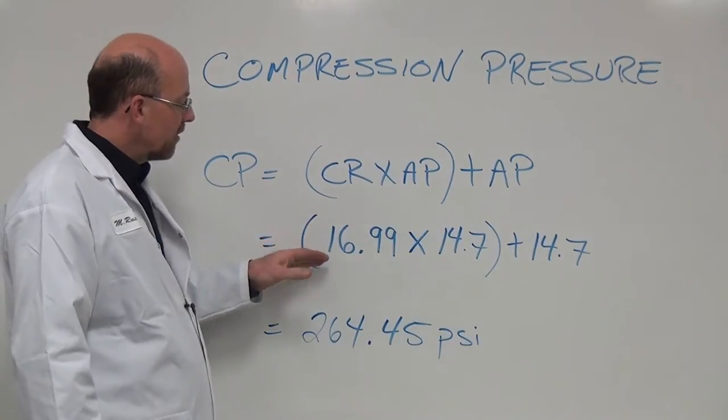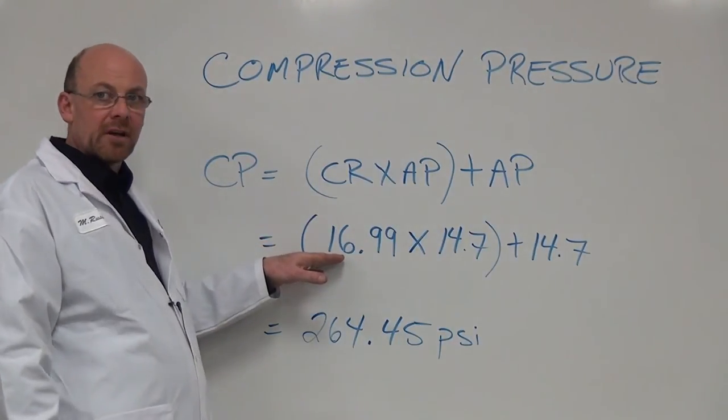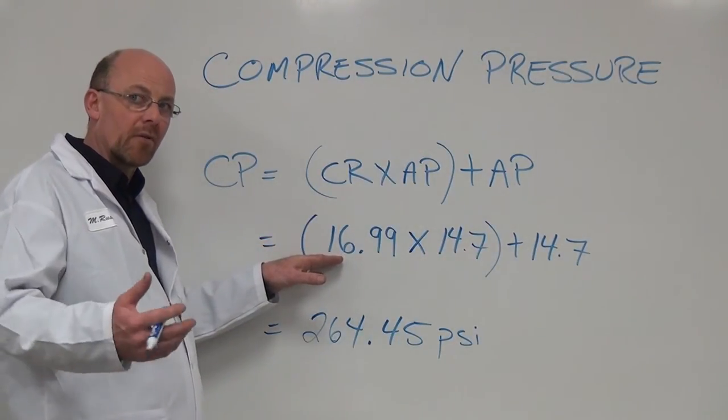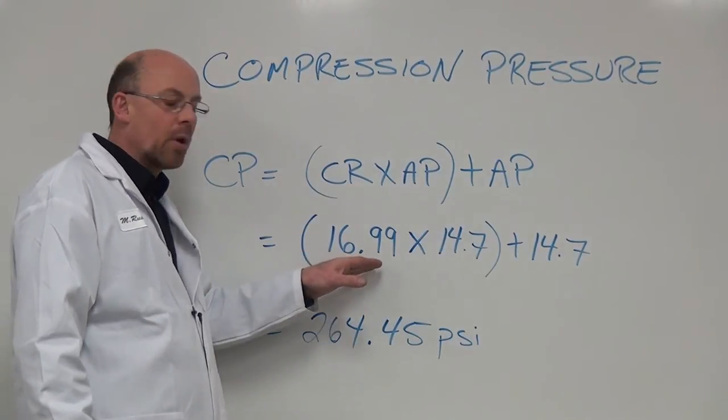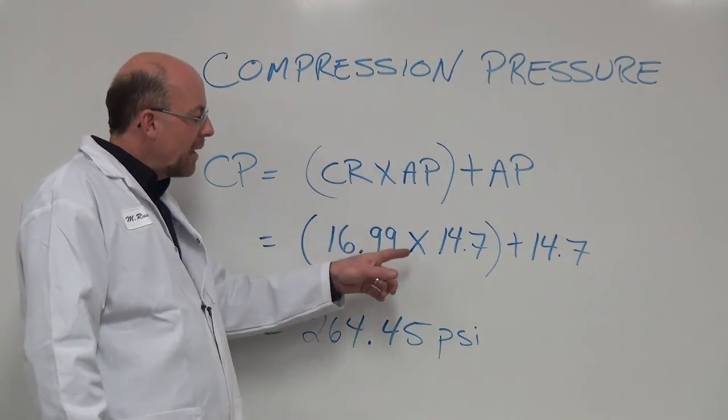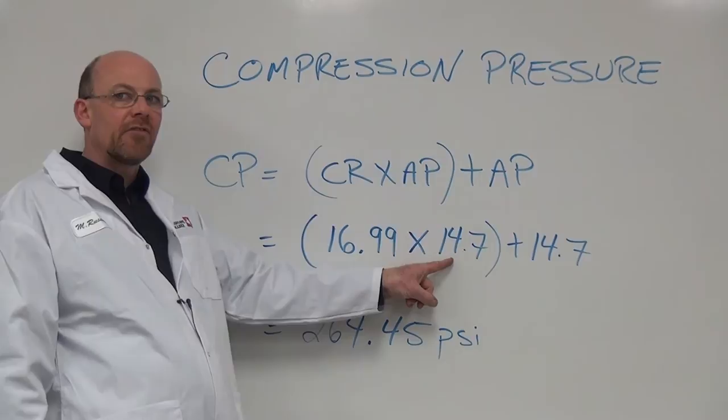So if we take a look at this, and again I've picked up this particular compression ratio from a prior formula of 16.99 to 1, and then we multiply that times our atmospheric pressure.